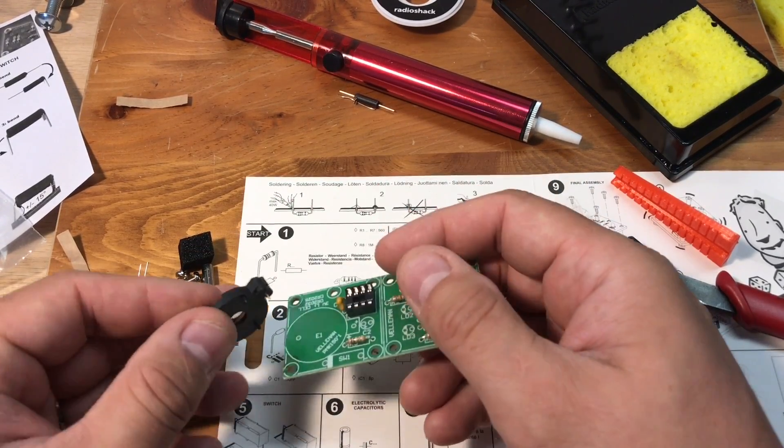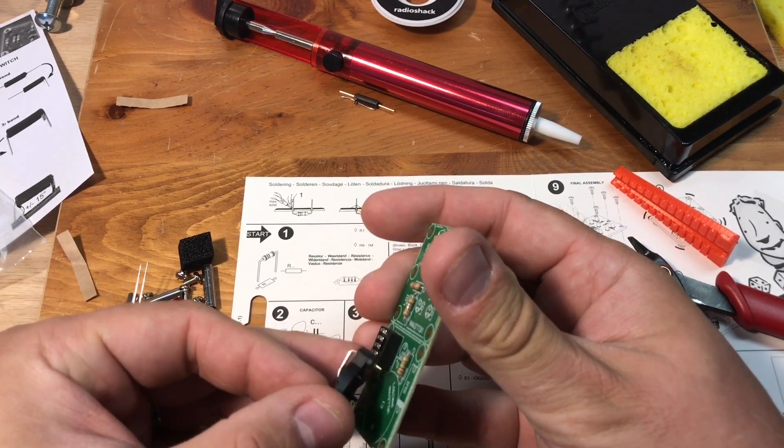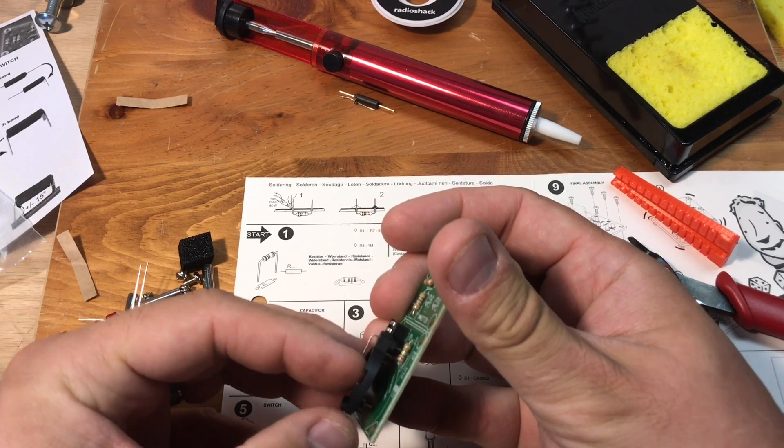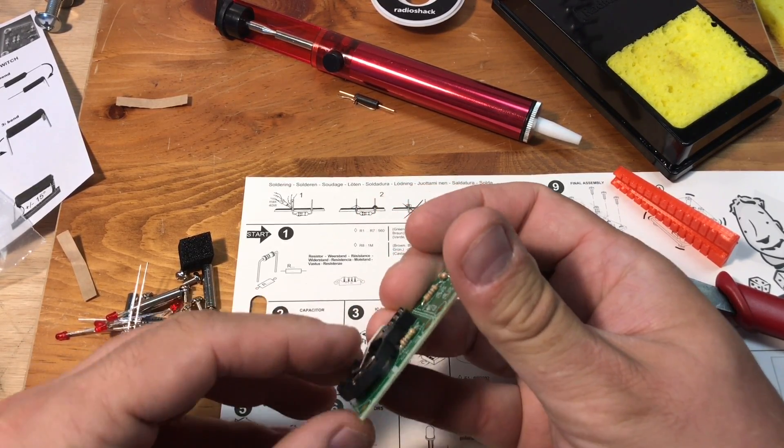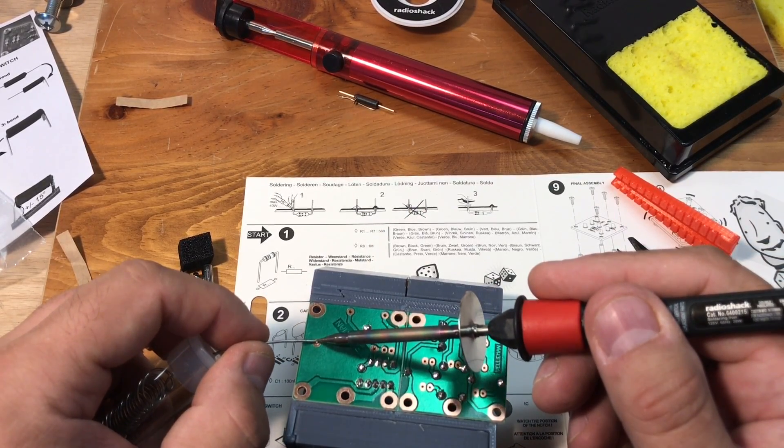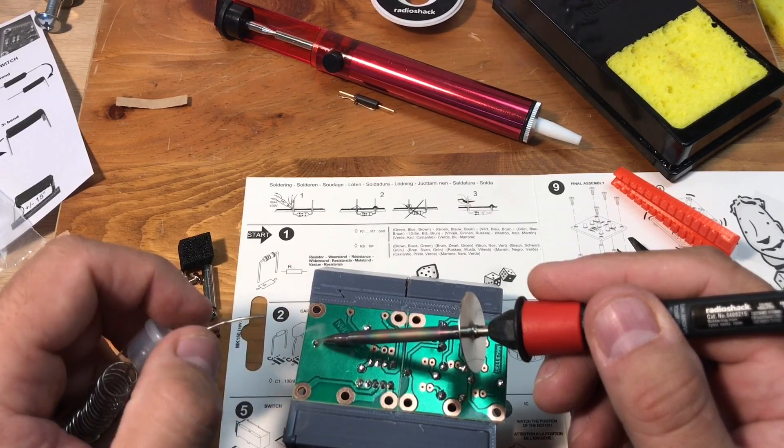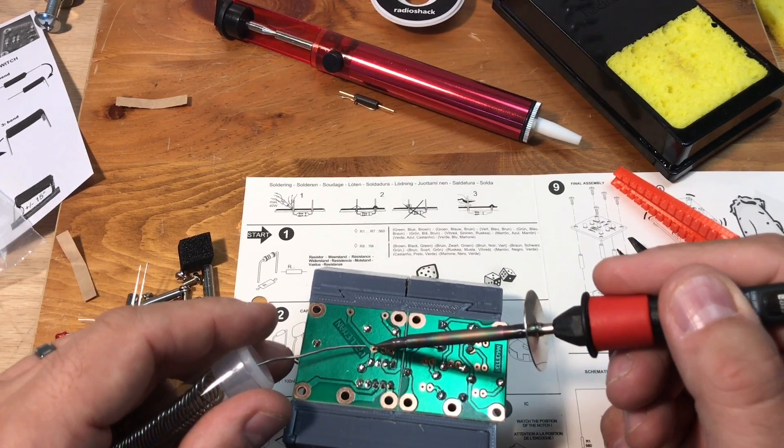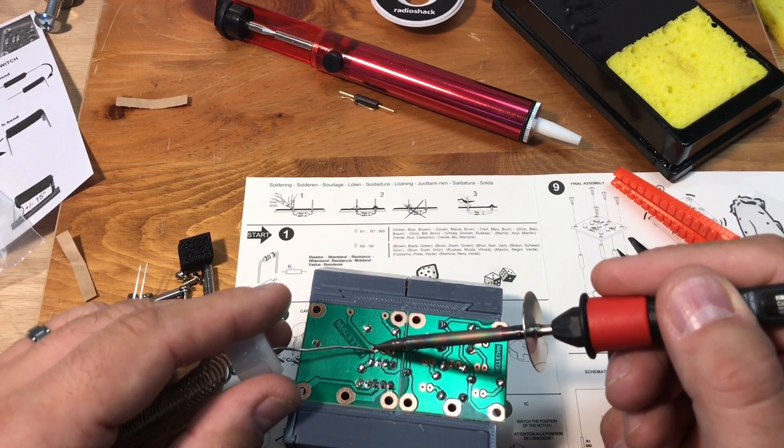The next step was install the battery holder. This just had two leads that went into holes at designated locations. I put that in place and this thing wanted to fall out actually. So I had to bend the leads a little bit. And then just two quick solder joints. And that guy was in place. So I was ready to move on to the next step.